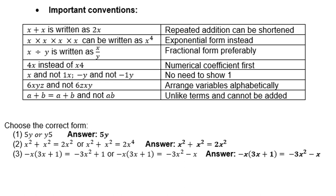x plus x can be written as 2x because it is repeated addition and can be shortened. x times x times x times x can be written as x to the power 4 because we use the exponential laws to add the exponents. x divided by y is rather written as x over y because we prefer the fractional form.